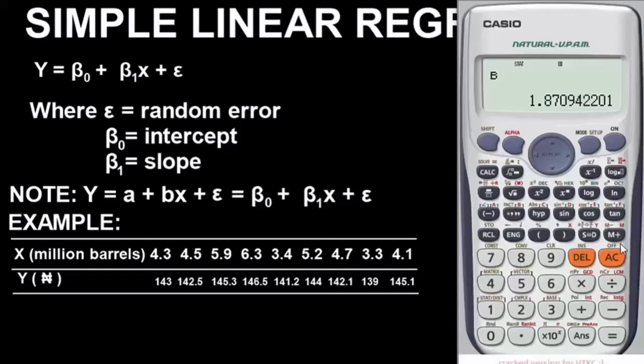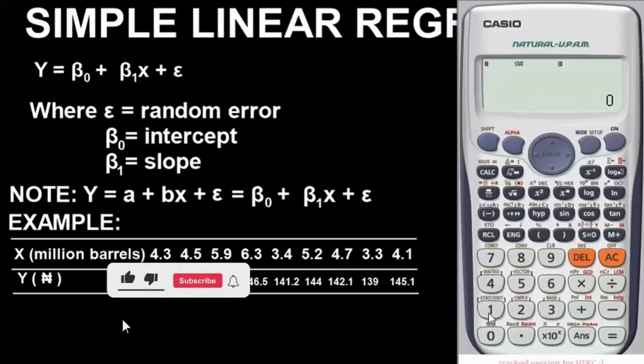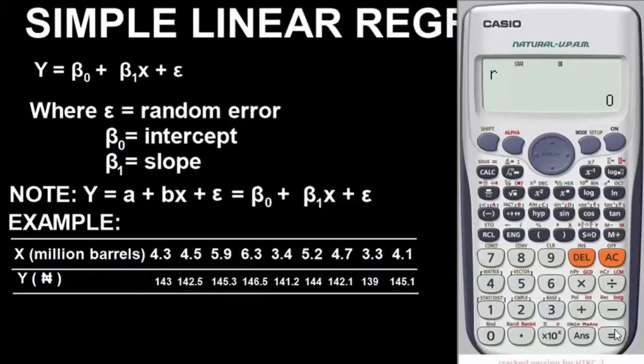Lastly for this question, we are asked to find the r which is correlation coefficient. Just press AC to come out, press shift, stat, and this will show r.